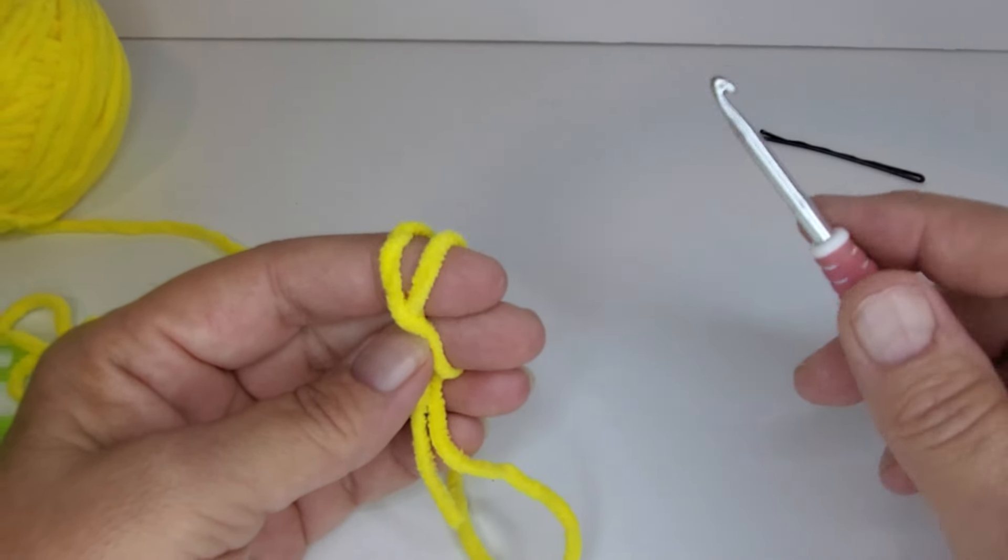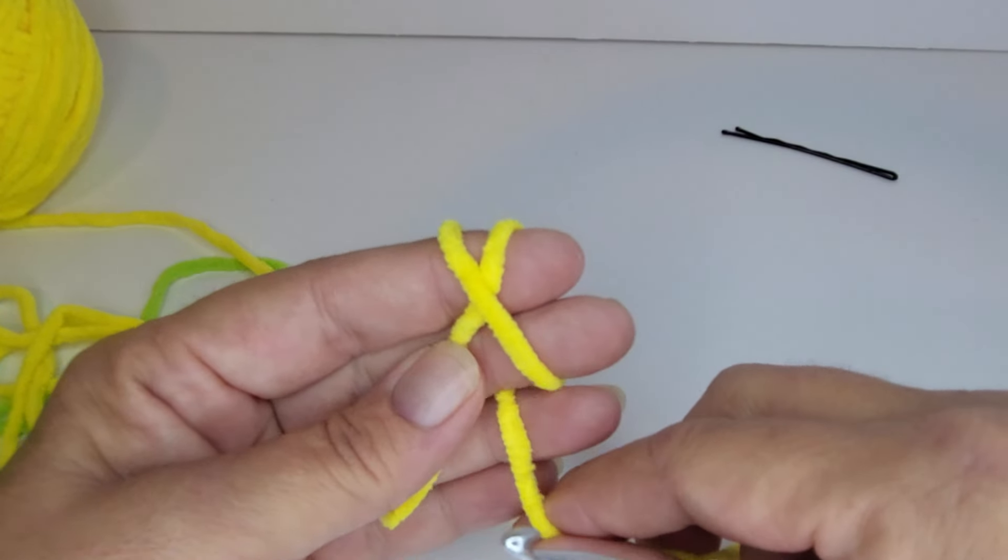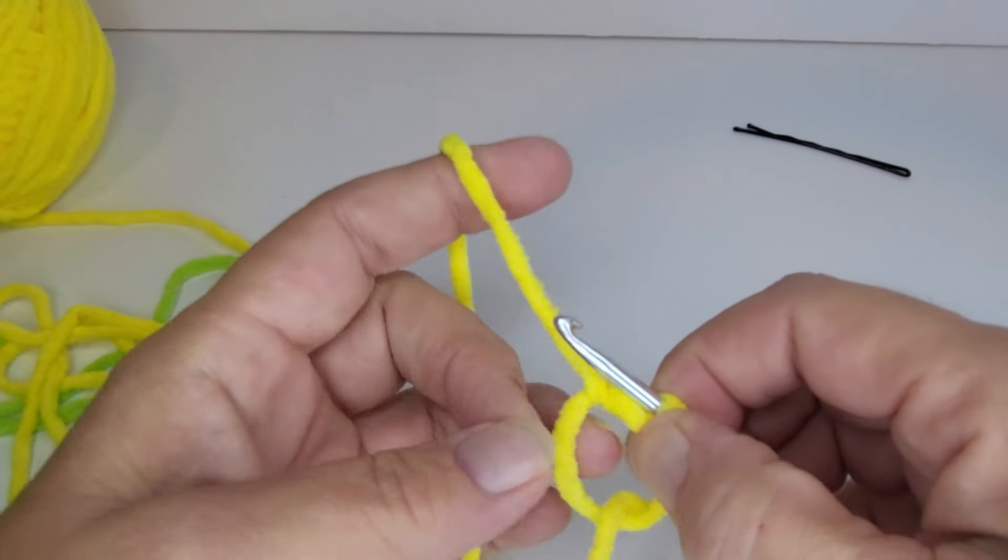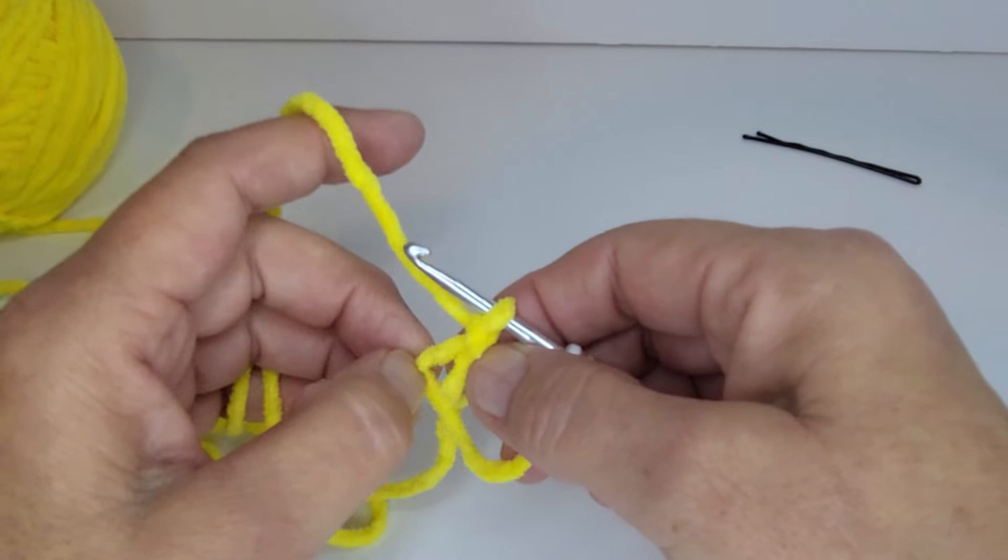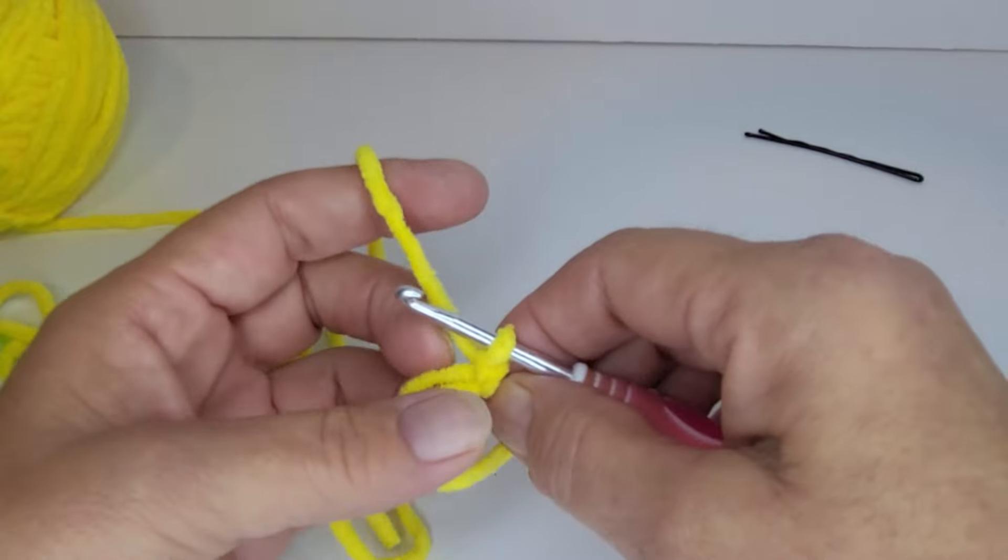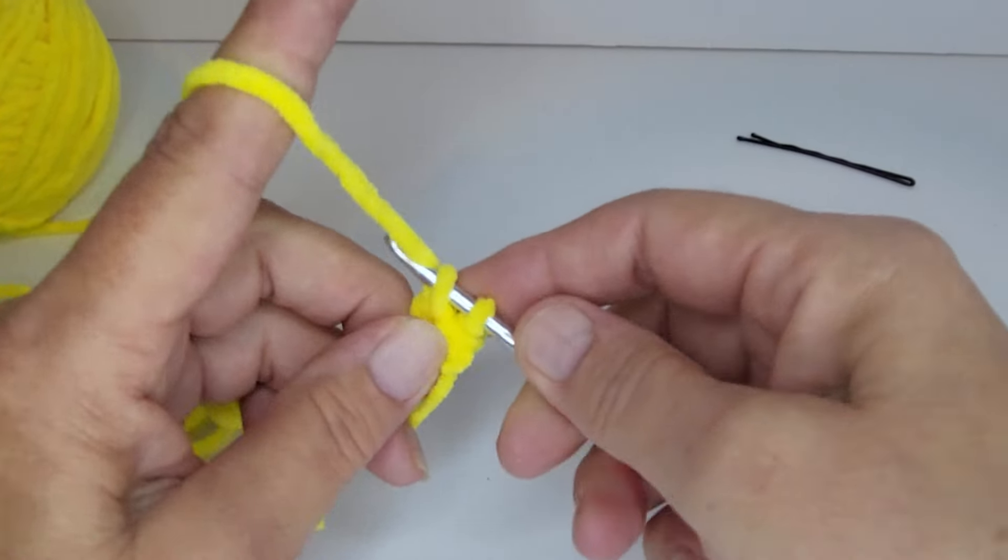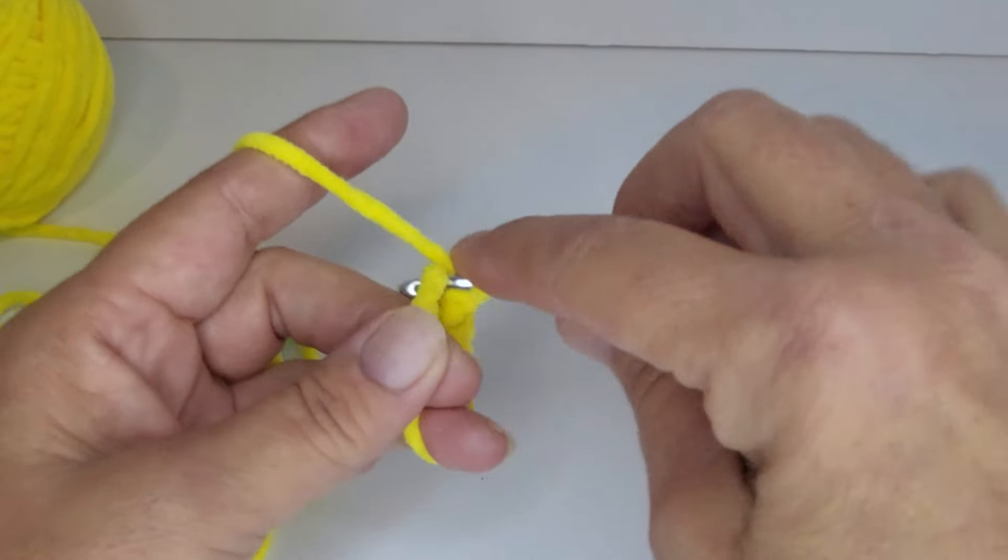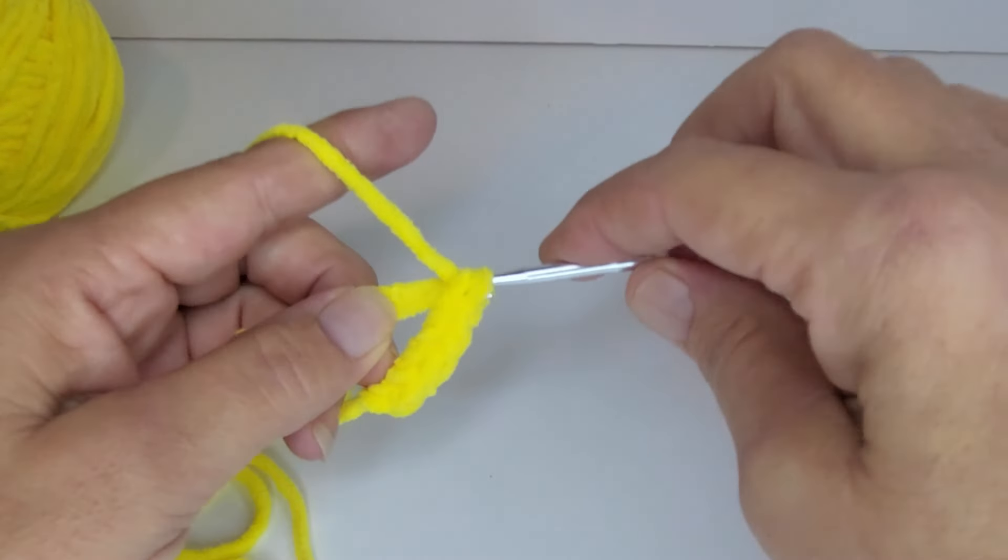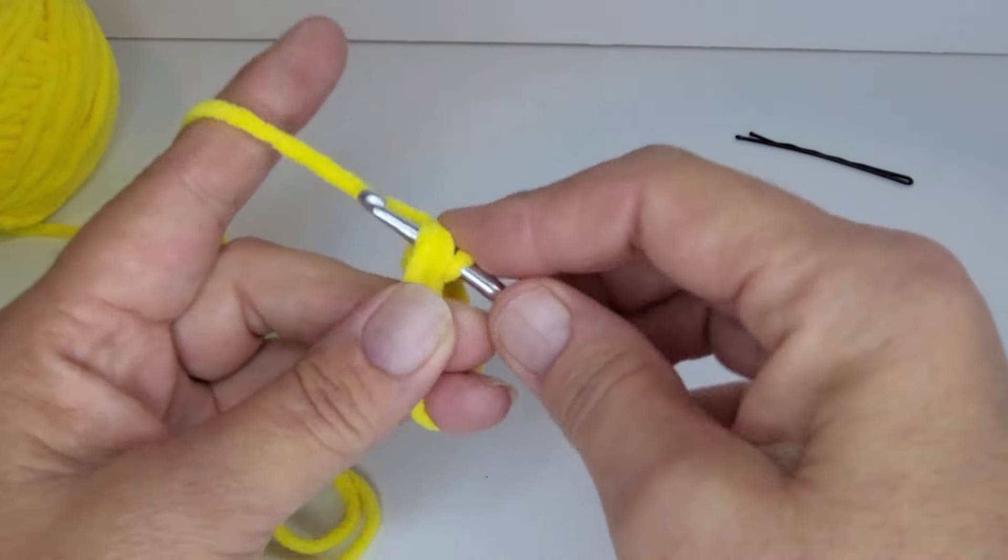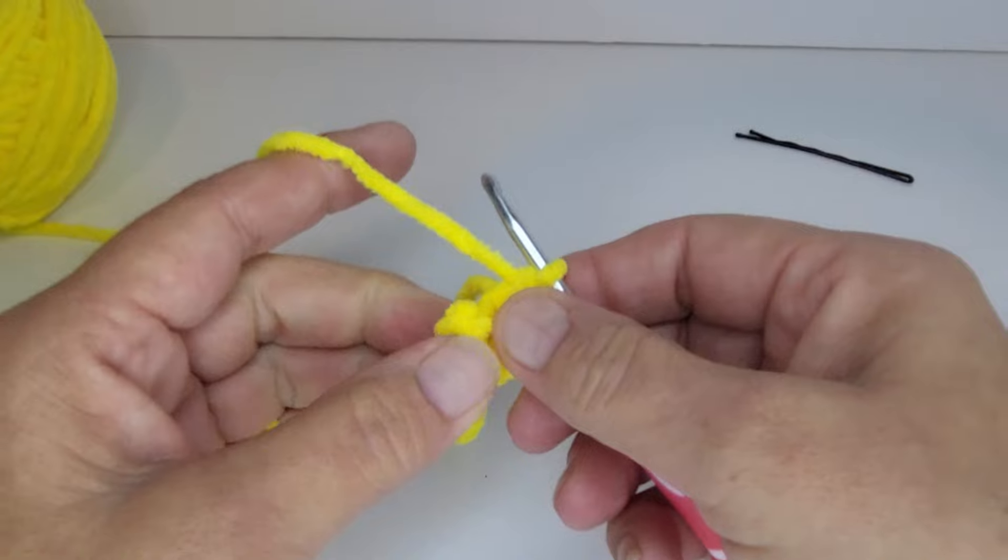We're going to put eight single crochet into the magic ring. To make a magic ring, I just do this and I cross it here. And I hold it and then I just pick this up and loop it in to lock it. And then I straighten out this tail so that it's not crossed. And that's very important to be able to close up your magic ring. Then you can easily pull this tail to close up that magic ring.